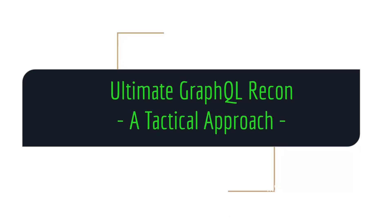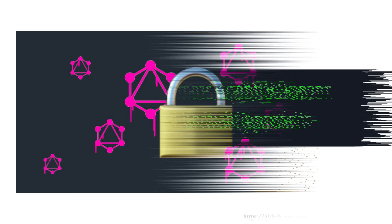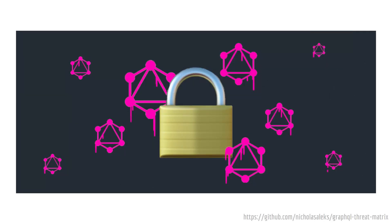From TypeScript to Golang to Ruby, Rust, Java, Python — just to name a few. Let's now begin by taking a look at the GraphQL threat matrix, which you can find for free on the GitHub of the authors.